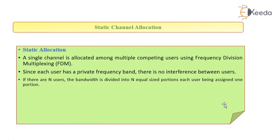Static channel allocation: a single channel is allotted among multiple competing users using frequency division multiplexing. Since each user has a private frequency band, there is no interference between users. If there are n users, the bandwidth is divided into n equal-sized portions so that each user is assigned one portion.